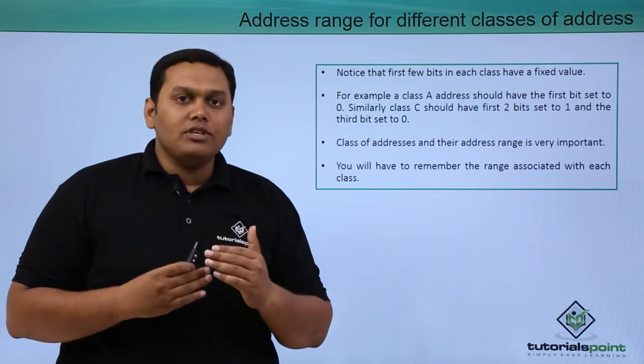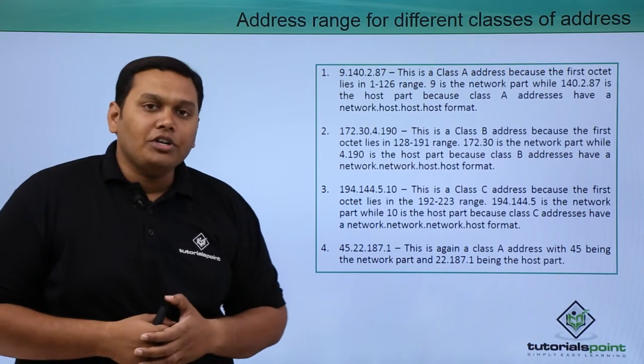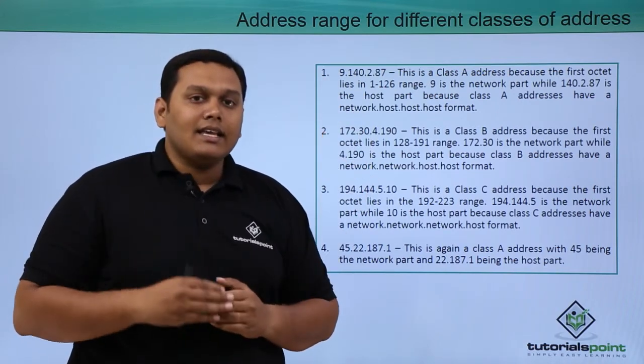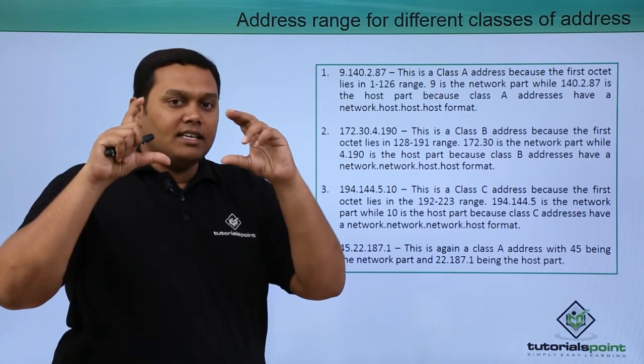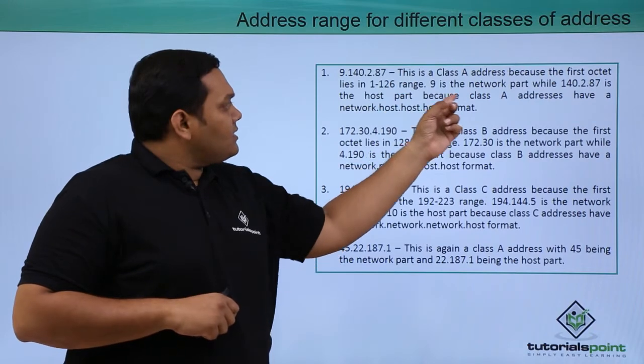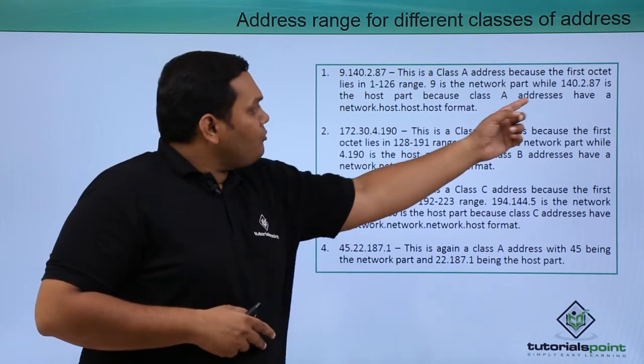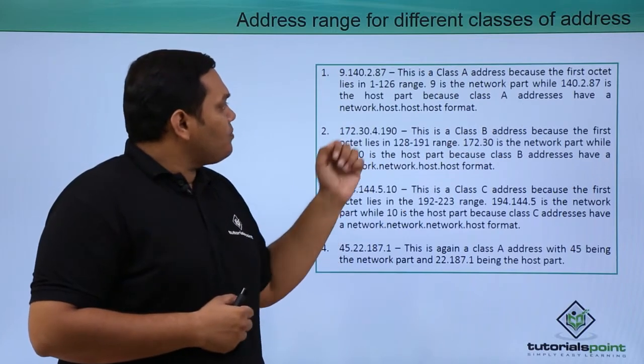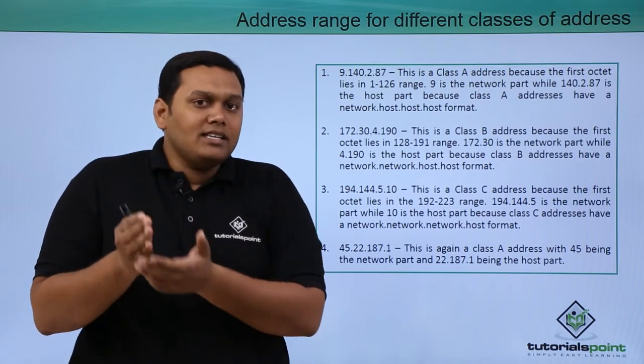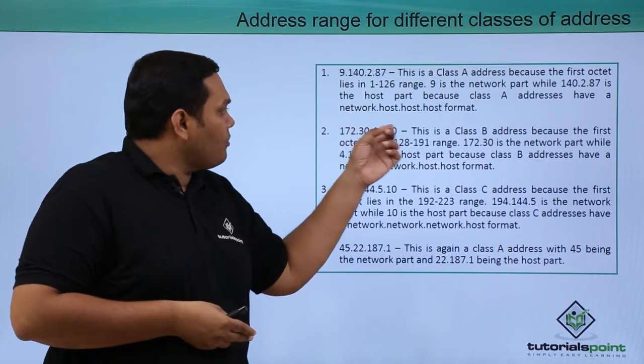You can see examples of how IP addresses are classified. Here, 9.140.2.87 is class A because 9 falls in the 1 to 126 first octet range. So 9 is the network part and 140.2.87 is the host part, because a class A address has the format network.host.host.host.